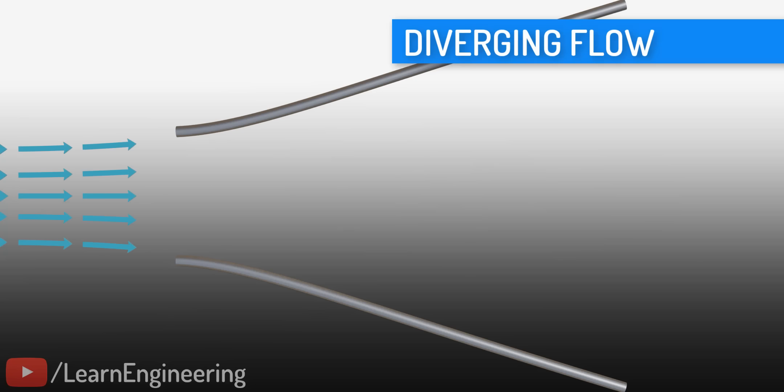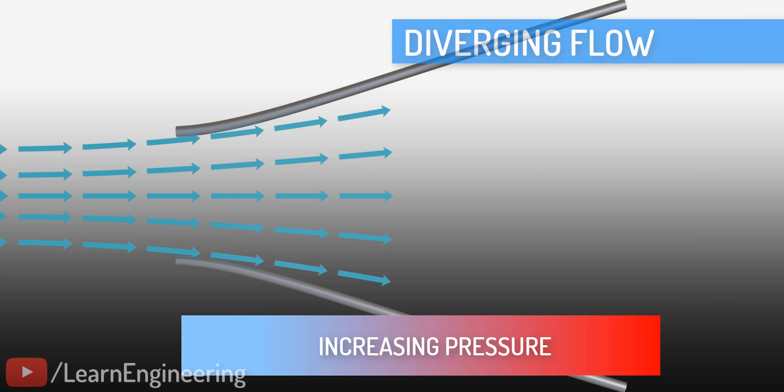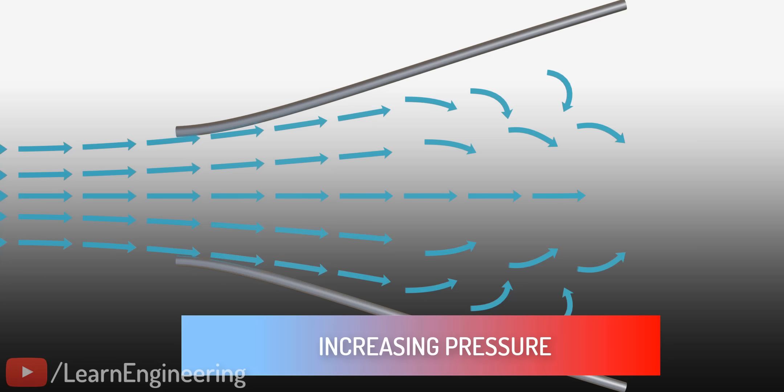For diverging flow, the case will be exactly the opposite. The pressure will increase along the flow. This pressure increase is called an adverse pressure gradient condition. As the pressure increases along the flow, the fluid particle decelerates along the length. And after a particular length, flow reversal could occur.